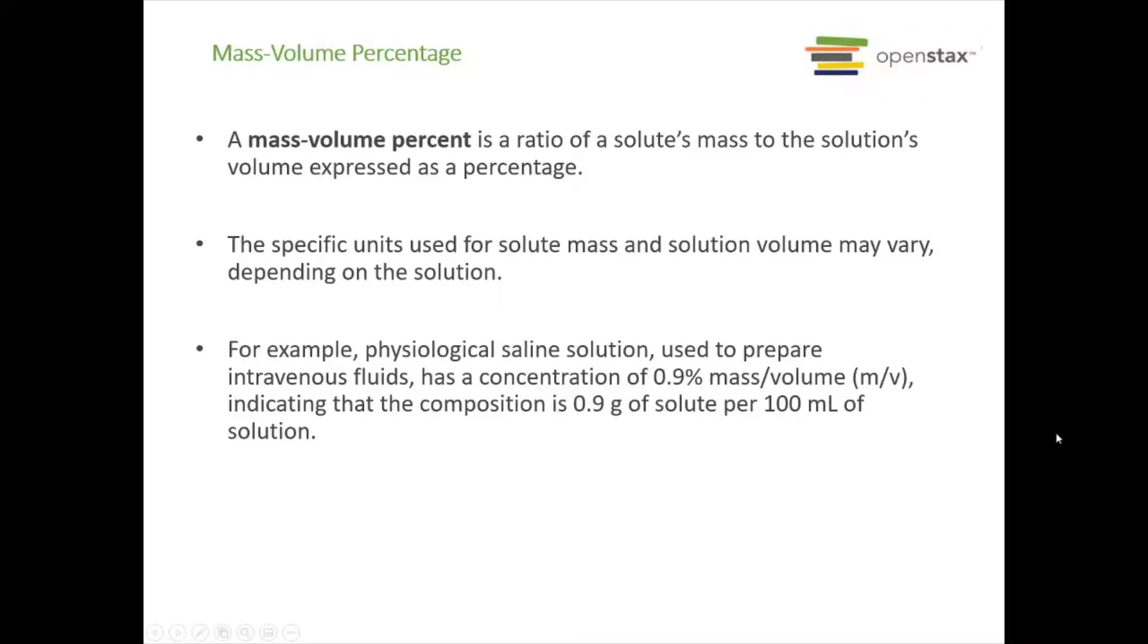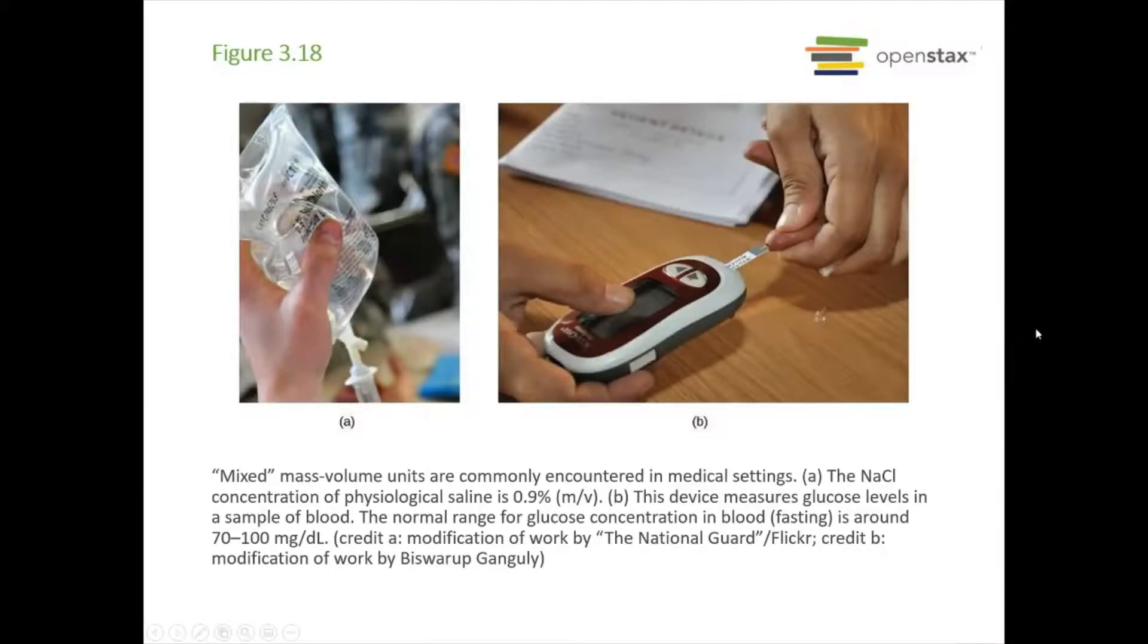The last type of concentration, which we don't even have an example for, is mass-volume. This is grams of solute per 100 milliliters of solution. This is very commonly used in medicine. For instance, saline solutions for IV fluids are 0.9% mass per volume of sodium chloride. That means there's 0.9 grams of solute per 100 milliliters of solution. Another example is glucose meters. They give you blood glucose in terms of milligrams per deciliter. This is also a mass-volume type of concentration, just not as a percentage.